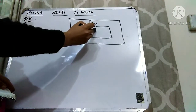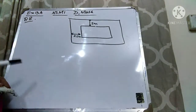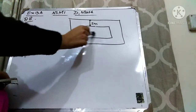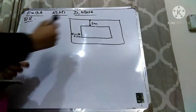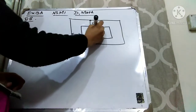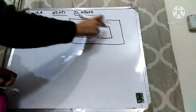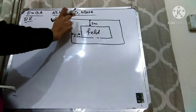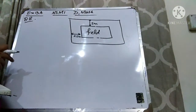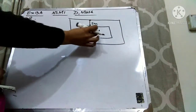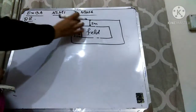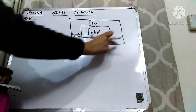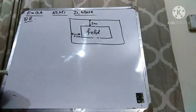Basically this is the rectangular field. You can see that this is the rectangular field and it's surrounded by a concrete path. This rectangular field is surrounded by this concrete path, and they are saying that we have to find out the area of the path. So if we find out the area of the whole figure and the area of this field, we can find out the area of this path by subtracting the area of the field from the whole figure.